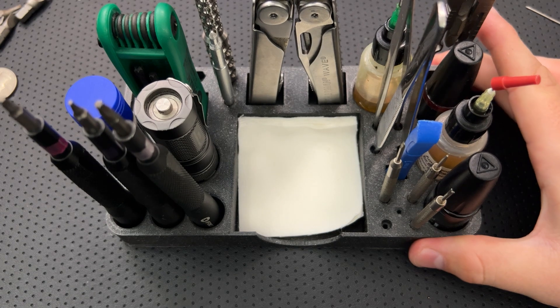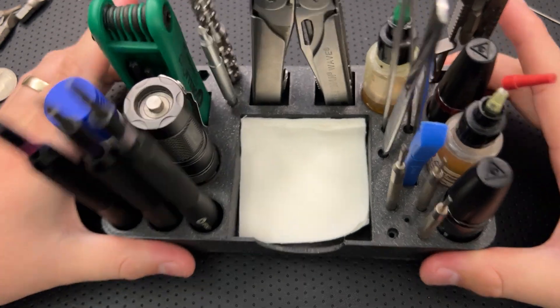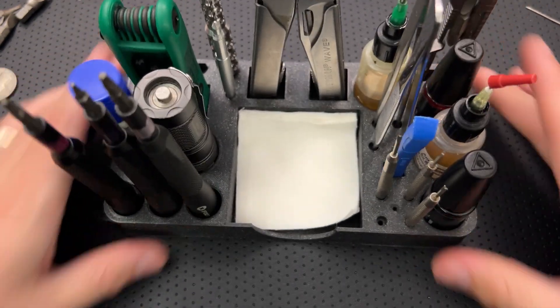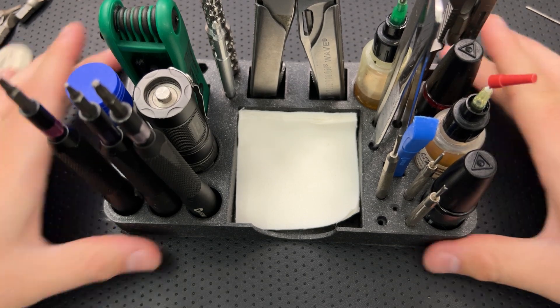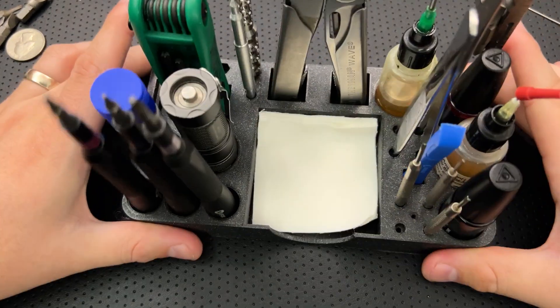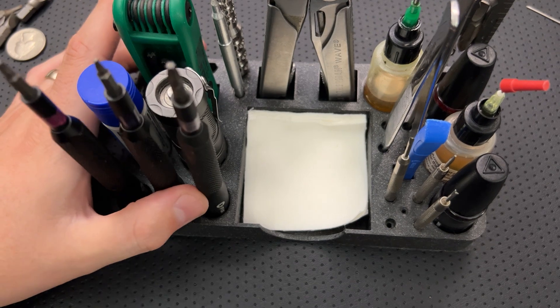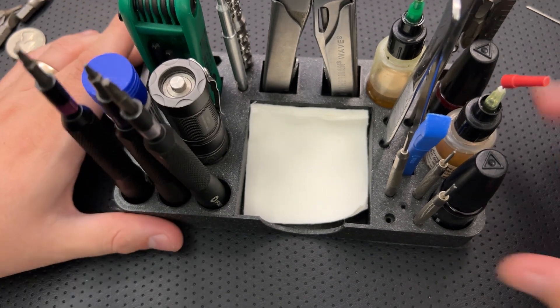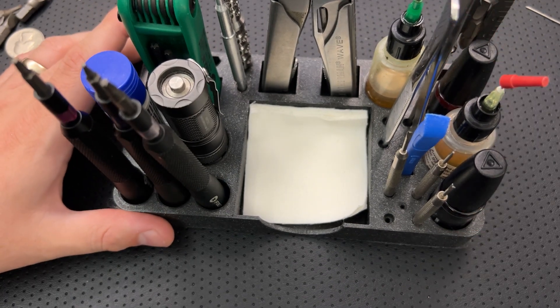The other major comment, though, and the other thing that kind of kept bothering me about this design is this had almost everything I needed. This was great because I could just grab this, bring it down to the kitchen table, for instance, and do some maintenance on something that wasn't getting filmed. That was very nice. But I was missing two important elements of it.